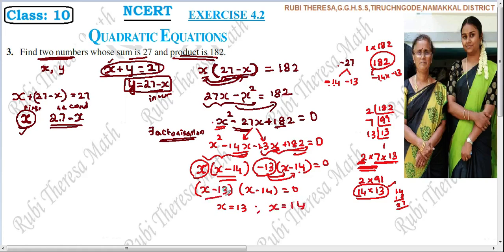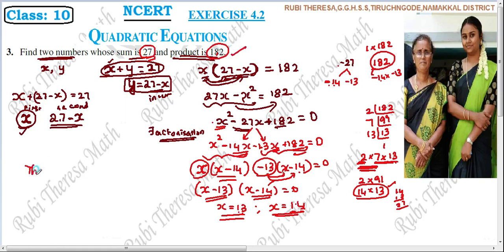When X minus 13 is equated to 0, X equals 13. When X minus 14 equals 0, X equals 14. So the two numbers are 13 and 14. Verification: 13 plus 14 equals 27, and 13 into 14 equals 182. Therefore the two numbers are 13 and 14.